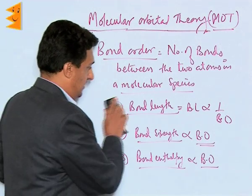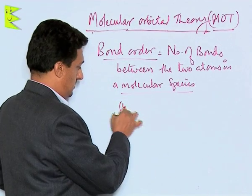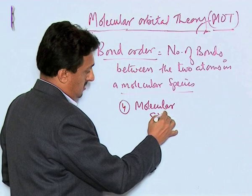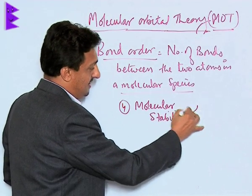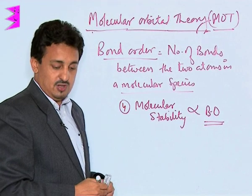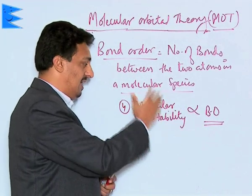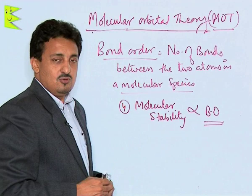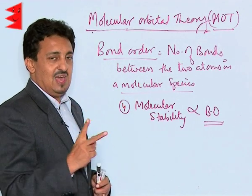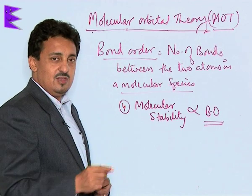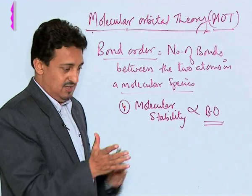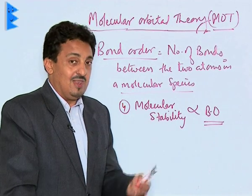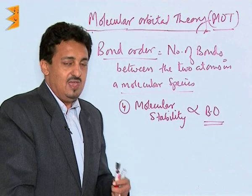Molecular stability is also directly proportional to bond order. If two species have the same bond order, the one with more electrons in the bonding molecular orbital will be more stable, because electrons present in bonding molecular orbitals lead to lower energy. Those molecular species having more electrons in bonding molecular orbitals will definitely be more stable with lower energies.